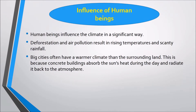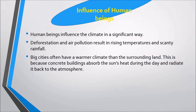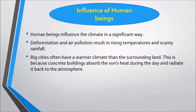Next is the influence of human beings. Human beings influence the climate in a significant way. Deforestation and air pollution result in rising temperatures and reduced rainfall. Big cities often have a warmer climate than the surrounding land because concrete buildings absorb the sun's heat during the day and radiate it back into the atmosphere.